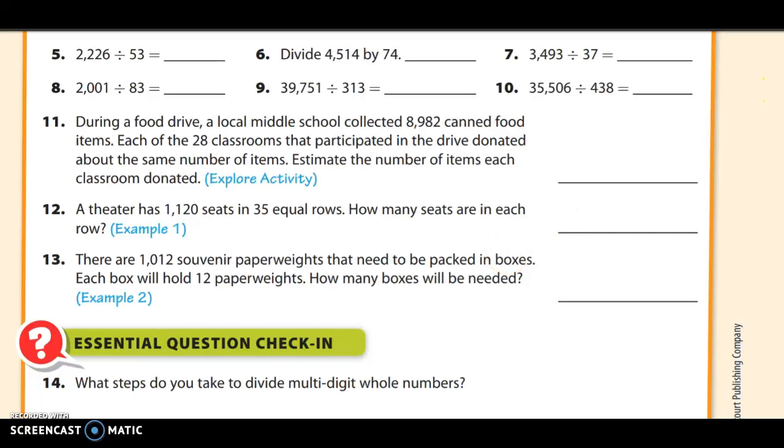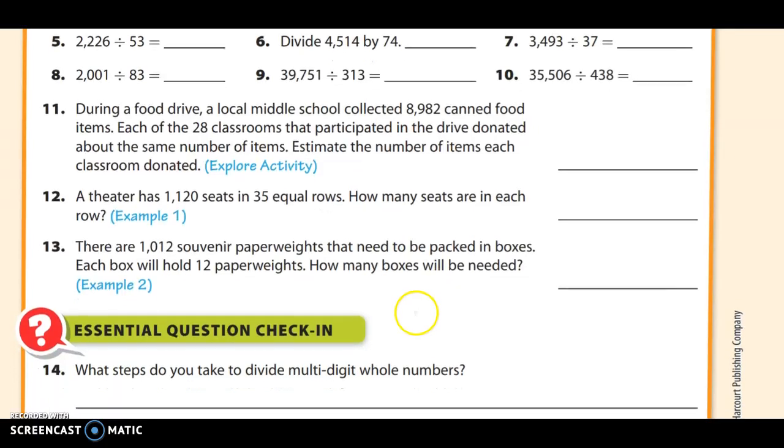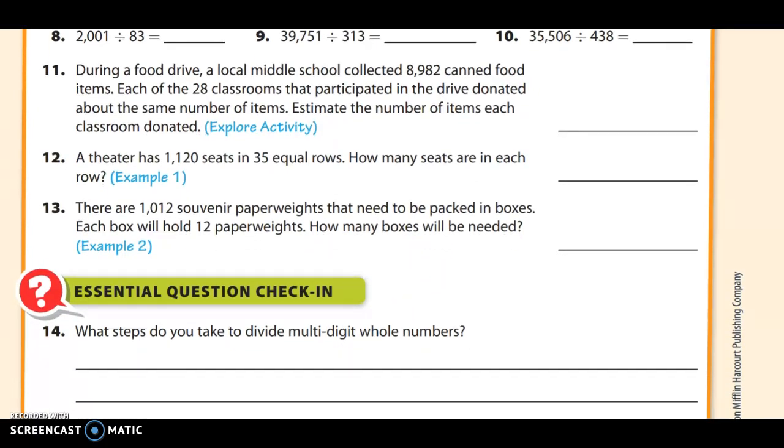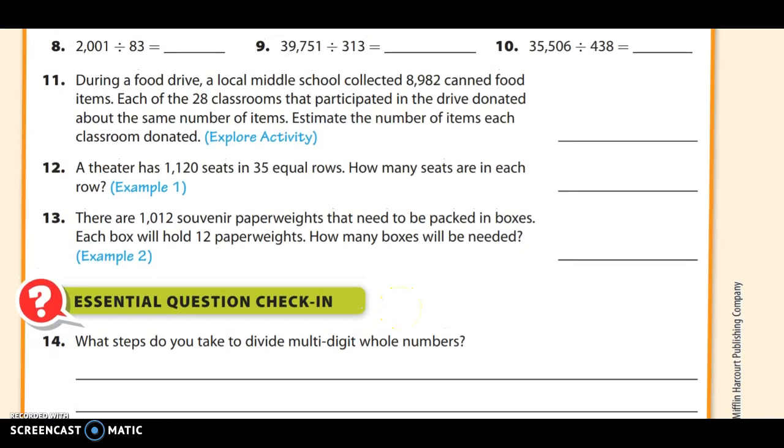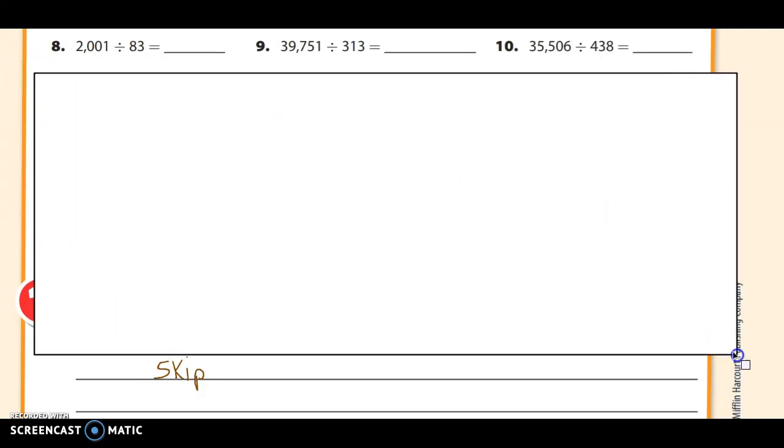Alright, this is page 110, part 2. We're going to do the bottom of the page. We have already done numbers 5, 6, and 7, so we're doing 8 through 13. We'll just say right now we're going to skip the check-in question. So you can write skip right there. And we're going to use a whiteboard here to solve these problems.